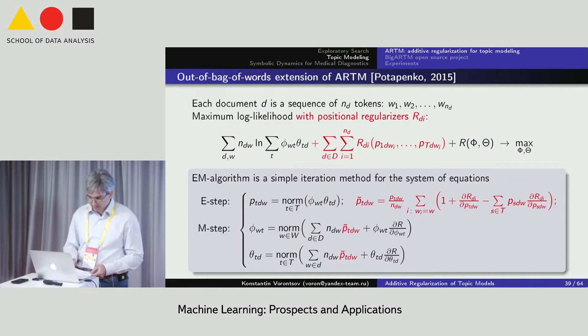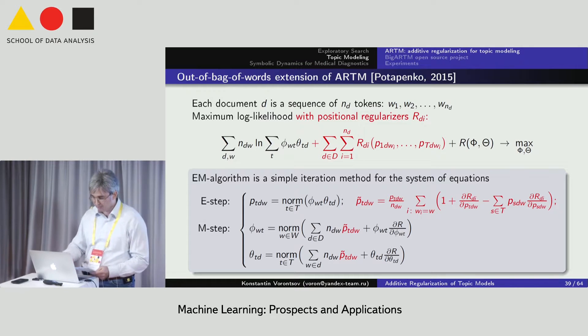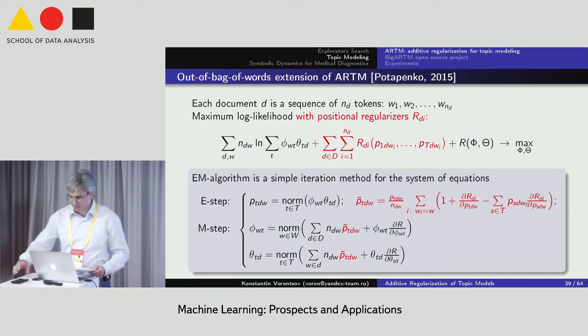Another extension of ARTM removes the bag of words assumption. To do this, we introduce the sum of regularizers depending on the position of terms. i is the position of term w in the document d. This time, the EM algorithm remains again, except for the inclusion of a special post-processing stage after usual E-step. The details of this approach are presented in the poster of Anna Potapenko, and I also can answer questions about this work.